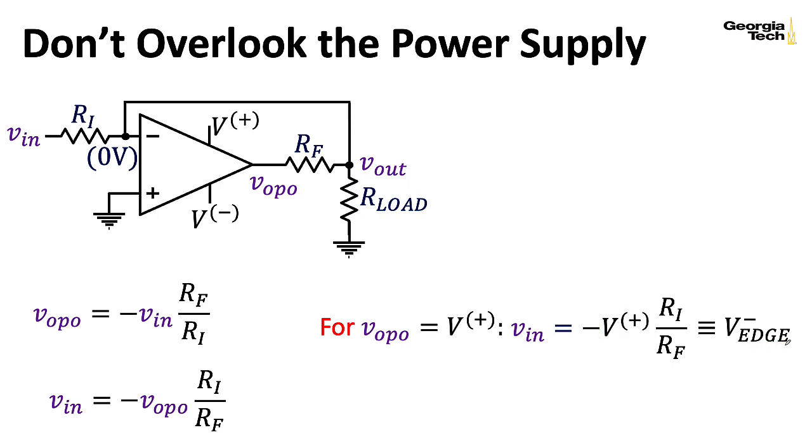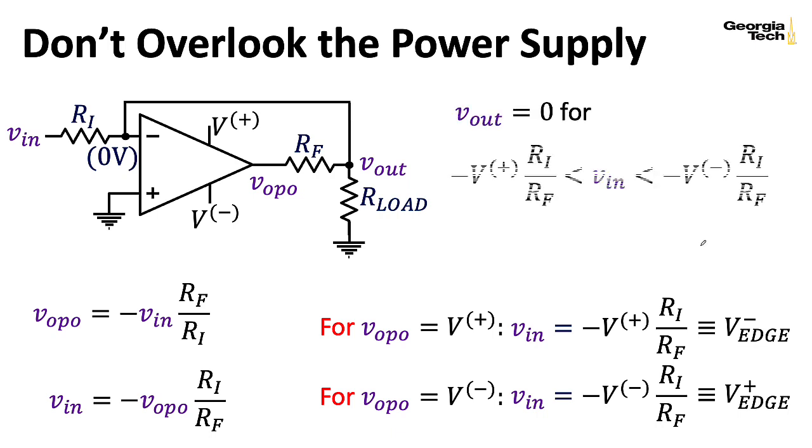So the next game we can play here is to plug in V minus. Well, we just take that plus, turn it into the minus, and here we see the positive edge for that deadband nonlinearity. So we do get zero out, and the golden op amp rules are being satisfied for input voltages between these ranges that we've represented with this subscript EDGE.